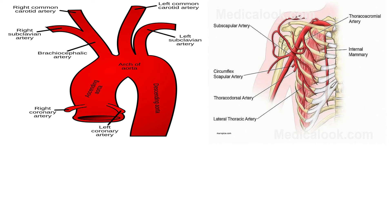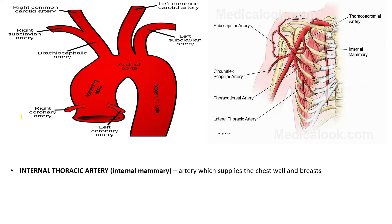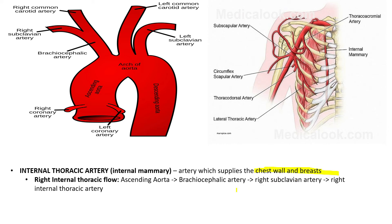Now let's talk about the arterial supply of the thorax. The internal thoracic artery, also known as the internal mammary artery, supplies the chest wall and the breasts. For the right internal thoracic artery, blood flows from the left ventricle into the ascending aorta, into the brachiocephalic artery, into the right subclavian artery, and at the first part of the right subclavian artery we have the internal mammary artery supplying the thorax.